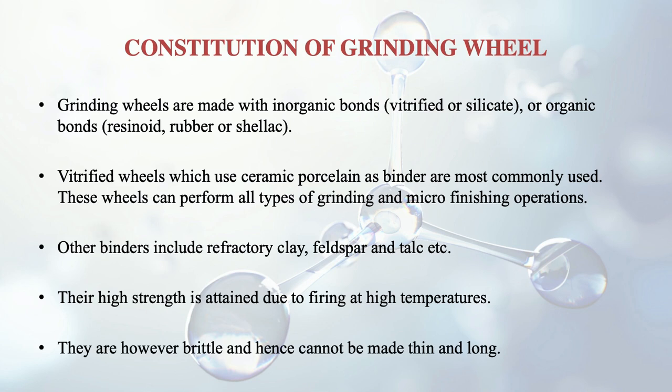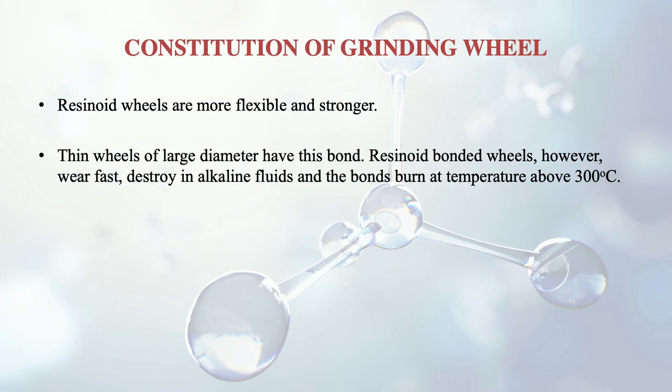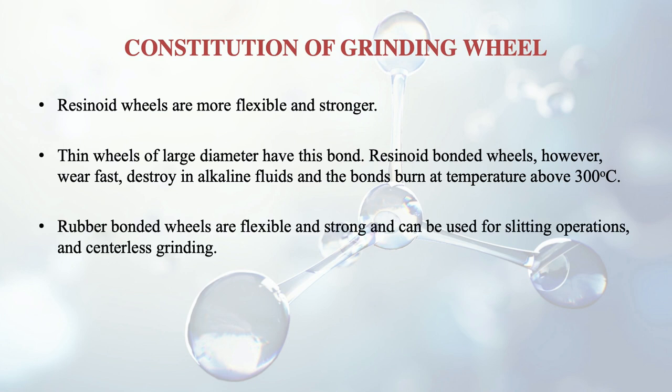Among organic types, resinoid wheels are more flexible and stronger. Thin wheels of large diameter have this bond, but resinoid bonded wheels wear fast and are destroyed in alkaline pools. The bonds burn at temperatures above 300 degrees centigrade. Rubber bonded wheels are flexible and strong and can be used for slitting operations and centerless grinding, but they deteriorate at around 150 degrees centigrade.